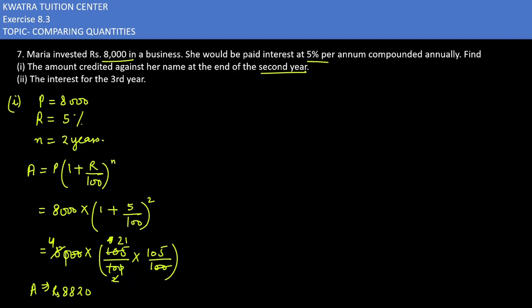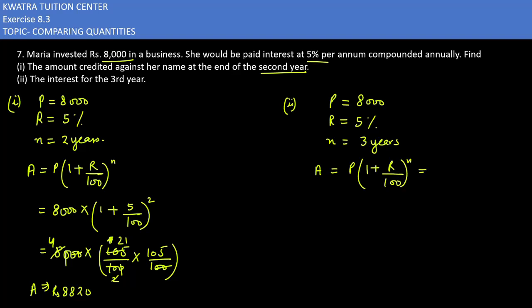Now in the second part they are saying find the interest for the third year only. We have found that the amount after two years is eight thousand eight hundred and twenty. Now for three years, the principle is eight thousand, rate is five percent, and time is three years. Using the same formula: Amount = 8000 × (1 + 5/100) raised to power three, so it is 8000 × (105/100) repeated thrice.